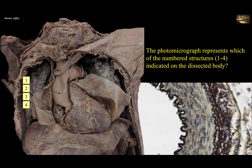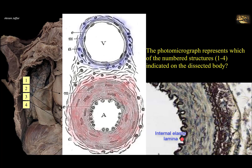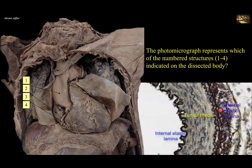The photomicrograph represents which of the numbered structures 1 to 4 indicated on the dissected body. The photomicrograph shows the wall of an artery — confirmed by the thickness of the wall and the presence of an internal elastic lamina, located at the border between the tunica intima and the tunica media. Note that there is a thick tunica media containing multiple layers of smooth muscle fibers, identifiable by their flattened oval nuclei. This is a medium-sized muscular artery, or distributing artery.